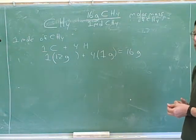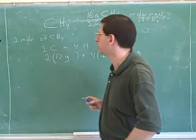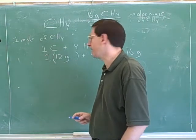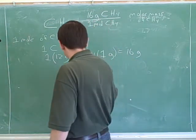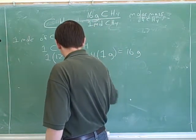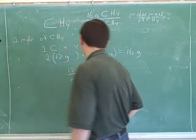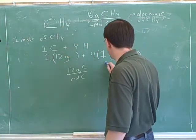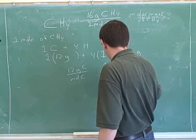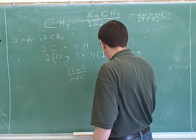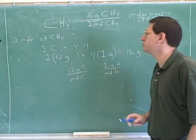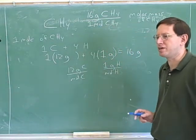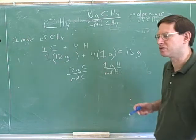Earlier we were using the periodic table to find the molar mass of atoms — the molar mass of carbon is 12 grams per mole, and the molar mass of hydrogen is approximately one gram per mole. Now we've moved on to molecules, and we can also use the periodic table to find the molar mass of molecules.